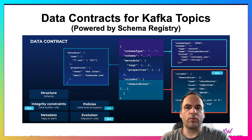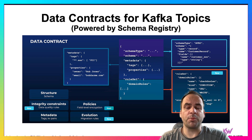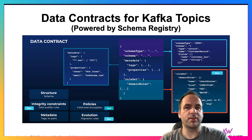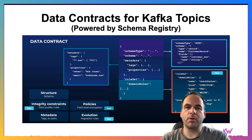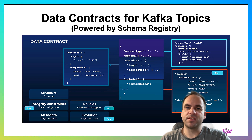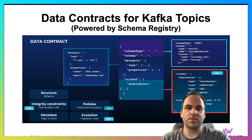The Confluent schema registry, which is available for free, is the de facto standard in the market, though there are others with different features so you need to check them out. In the commercial offering of Confluent like Confluent Cloud, you get a lot of these things out of the box, including the data contract configuration, the data portal on top of that for self-service, access control, audit logs, and so on.